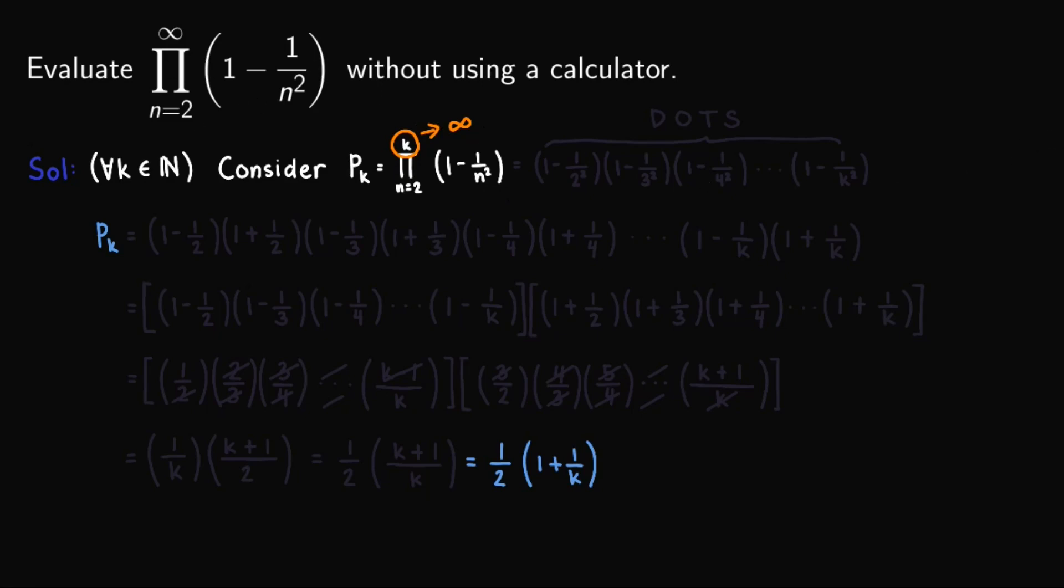So if k approach infinity, we'll have, as k goes to infinity, first take note that 1 over k goes to, we know that if we replace k here with infinity, then we'll have 1 over infinity. And we know that in limits, a constant over infinity is equal to 0. So 1 over k approaches 0 as k approaches infinity.